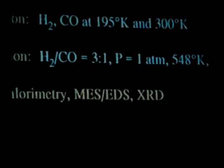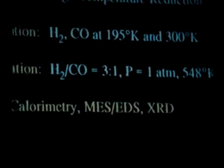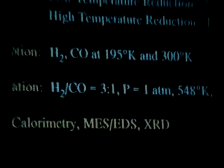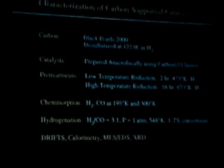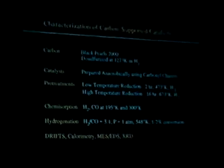Chemisorption of hydrogen was done following the standard desorption technique. We also did CO chemisorptions at 195 K and 300°C to determine dispersions. Hydrogenation was done with ratios of 3 to 1 hydrogen to CO, at 1 atmosphere, 548 K, in a differential mode. We characterized these catalysts using diffuse reflectance calorimetry, Mössbauer spectroscopy, and X-ray diffraction.